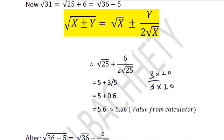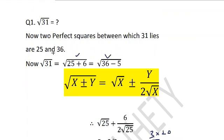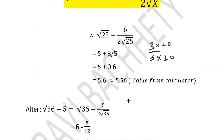Now in some cases almost up to three places it is accurate. I would like to solve the same question by the greater than perfect square number also. So √31 I can write it as √36 minus 5. We can write it like this.